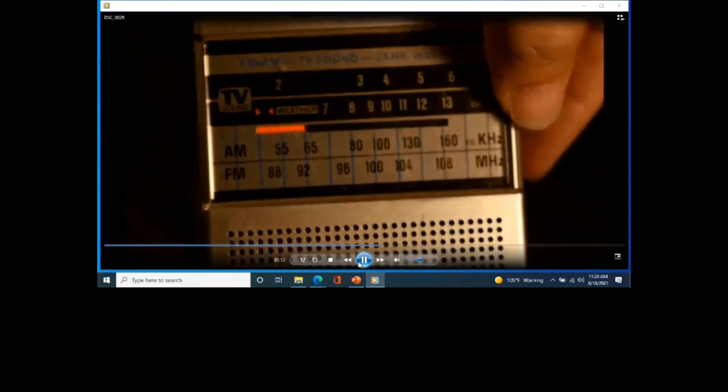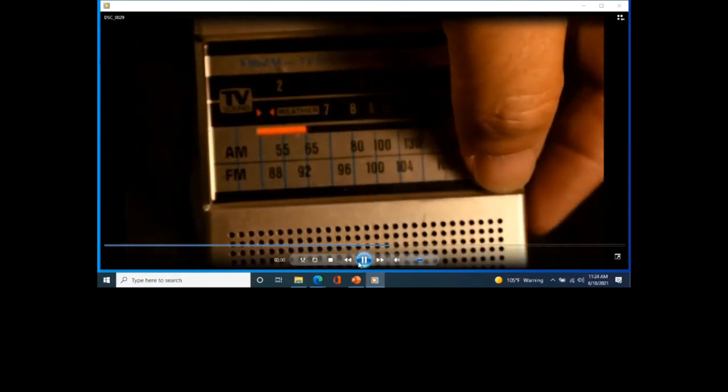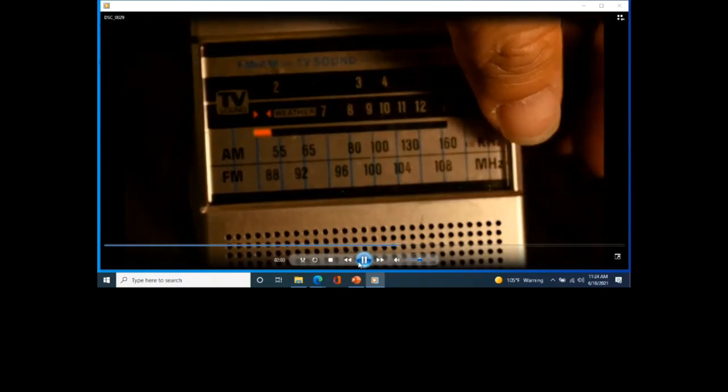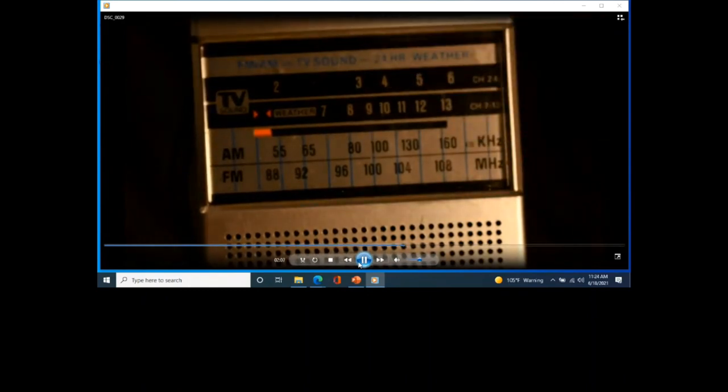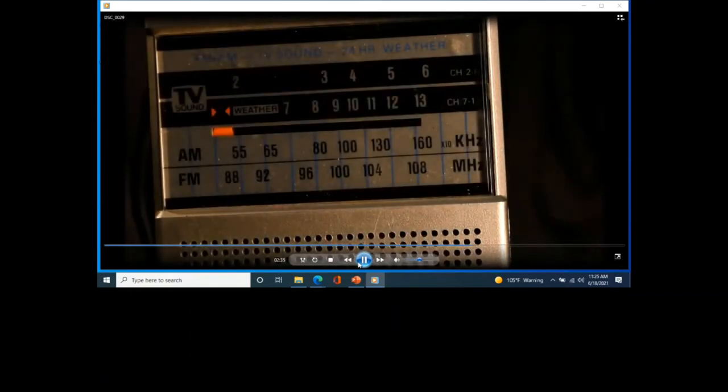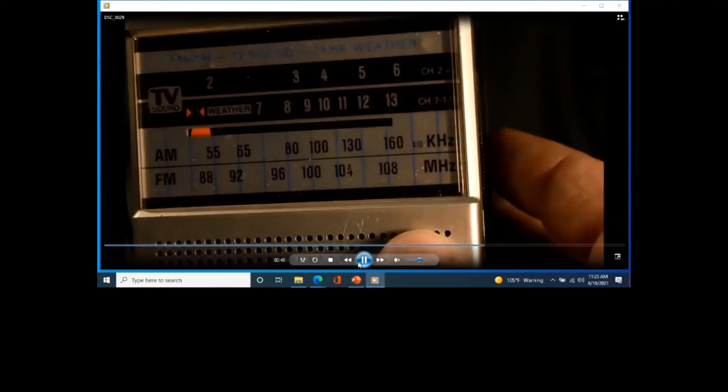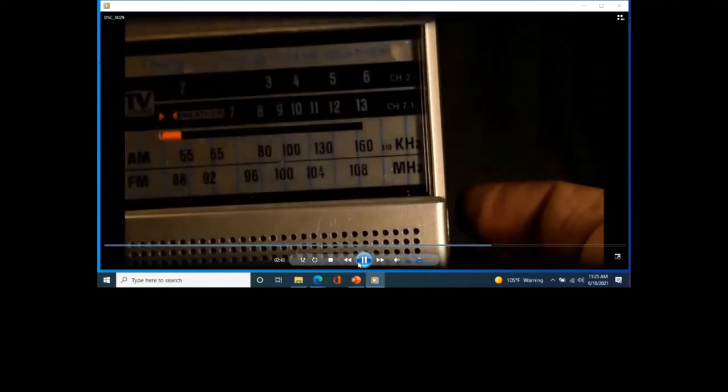Let's switch to the weather band. Weather band goes from 162.4 to 162.550 megahertz. The sixth harmonic on this radio will be 162.570, just outside the weather band. We've got all kinds of noise. If I turn it off, the noise goes away. Turn the radio back on, the noise is back. This is on the weather band, as you can see where I've got the selector right now.